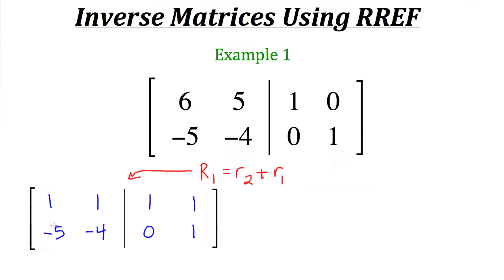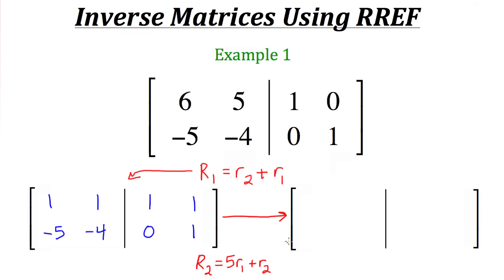Next, we want the value below the 1 in the first column to become 0 — so we need to eliminate the negative 5 in row 2. We multiply the first row by 5 and add it to the second row: in column 1, 5 times 1 plus negative 5 gives 0; in column 2, 5 times 1 plus negative 4 gives 1; in column 3, 5 times 1 plus 0 gives 5; and in column 4, 5 times 1 plus 1 gives 6.